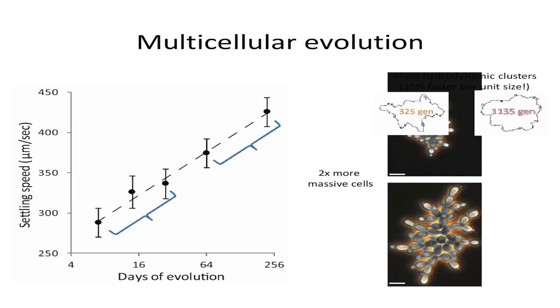Out at about a thousand generations, rather than just getting bigger, our snowflake yeast also get more efficient. They evolve to be more spherical and more hydrodynamic, settling about a third faster per increase in mass than previous strains. They are actually changing the architecture of the group in response to these conflicting selection pressures — faster settling but also fast growth.